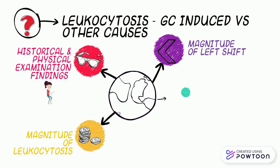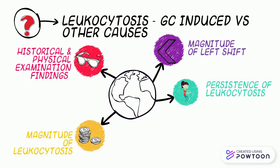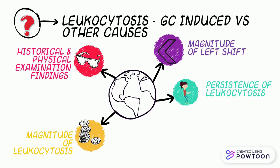Another clue is the persistence of leukocytosis. If it's glucocorticoid related, it typically starts in 5 to 24 hours and has a constant value over time. It also does not correlate with acute phase reactants.